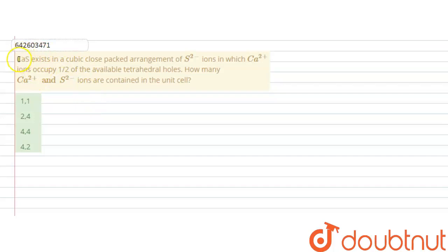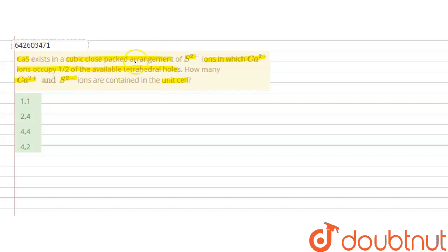The question is: calcium sulfide exists in a cubic close-packed arrangement of S²⁻ ions, in which calcium two positive ions occupy half of the available tetrahedral holes. How many calcium two positive and sulfide ions are contained in a unit cell? It is given that calcium sulfide exists in cubic close-packed arrangement, and calcium ions occupy half of the available tetrahedral holes.